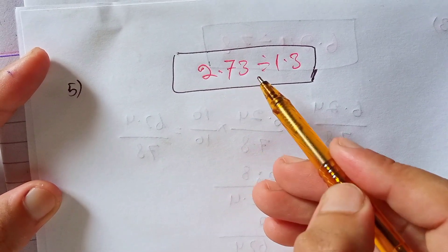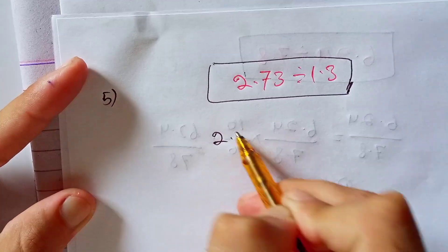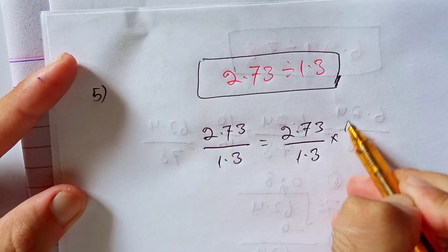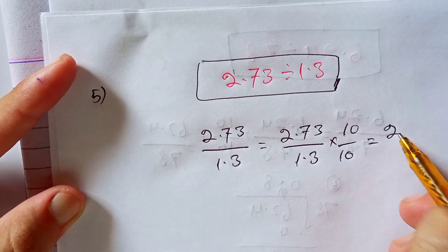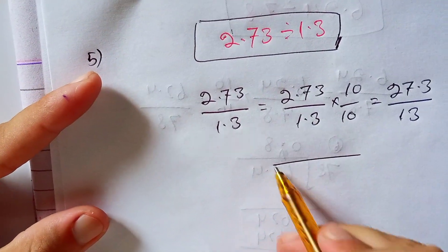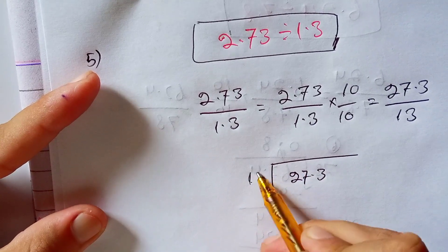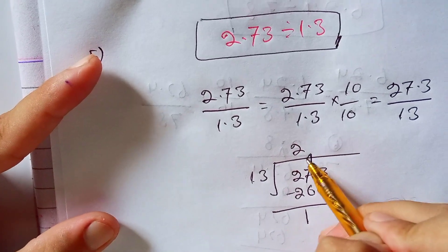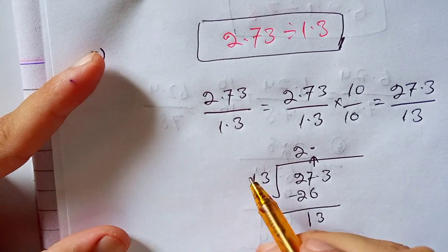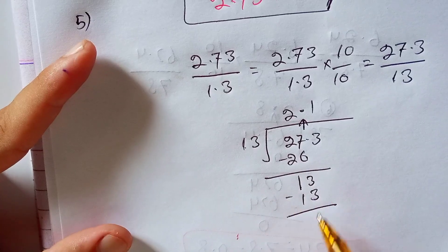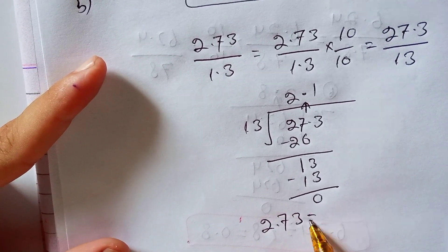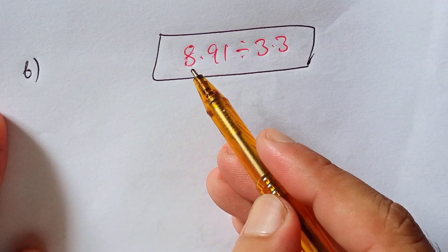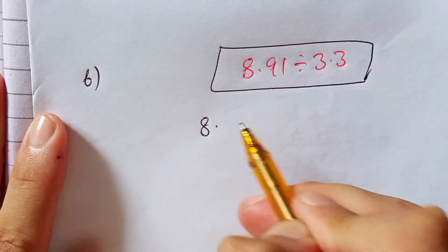In this question we have to divide 2.73 by 1.3. So 2.73 divided by 1.3, multiplied by 10 divided by 10, equals 27.3 divided by 13. How many times does 13 go into 27? 2 times 13 is 26. Subtract 26 from 27, the remainder is 1. Carry the decimal point and bring down the 3 to make 13. 13 times 1 is 13. Subtract 13 from 13, the remainder is 0. So 2.73 divided by 1.3 equals 2.1.